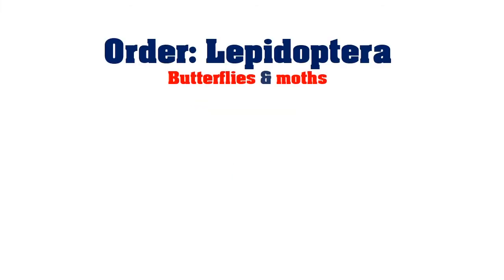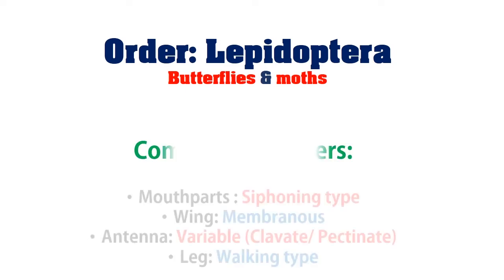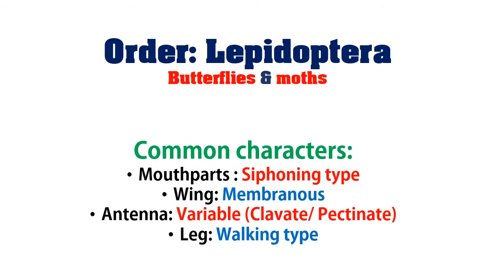Lepidoptera — the most beautiful order of insects. Butterflies and moths are generally in these groups. Common characters of them: mouthparts siphoning type, wing membranous, antenna variable — generally clavate, capitate, pectinate, or bipectinate — and legs walking type.